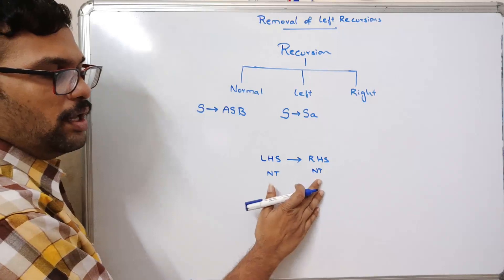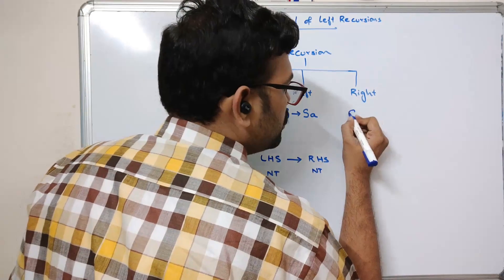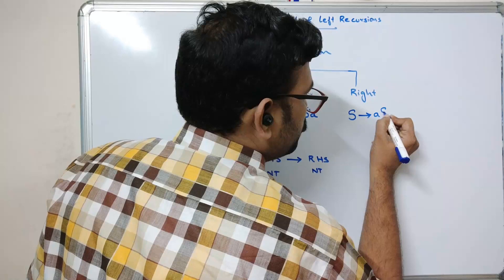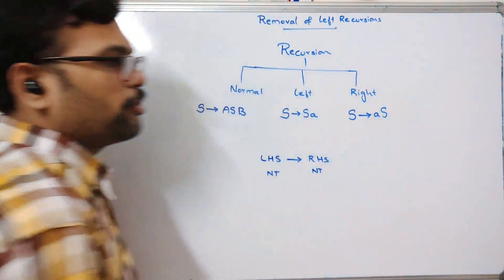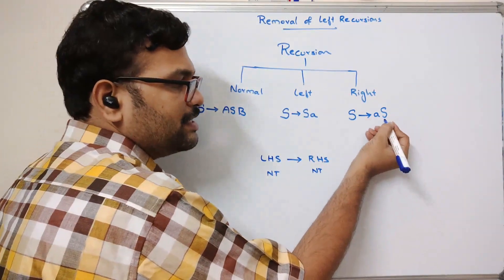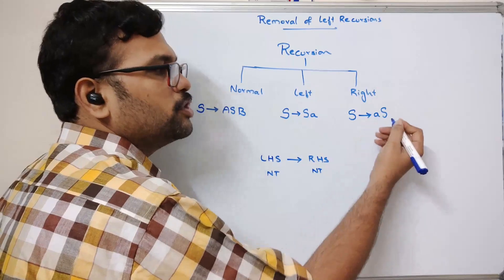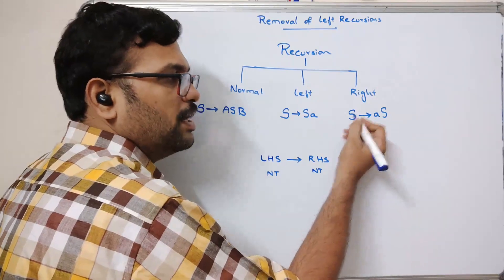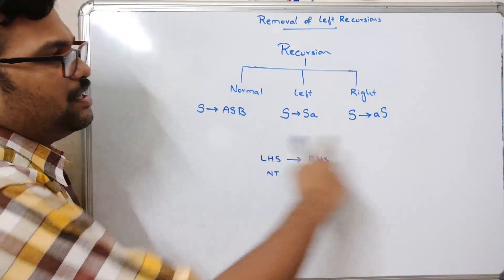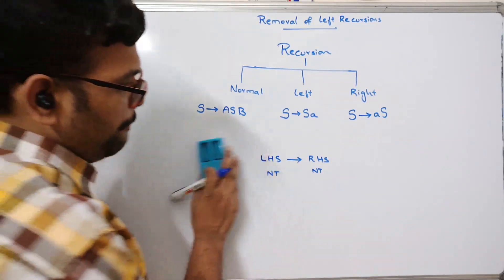If the same non-terminal is on the rightmost position of the right hand side, it is called right recursion. So these are the three different types of recursions: normal, left, and right recursion.